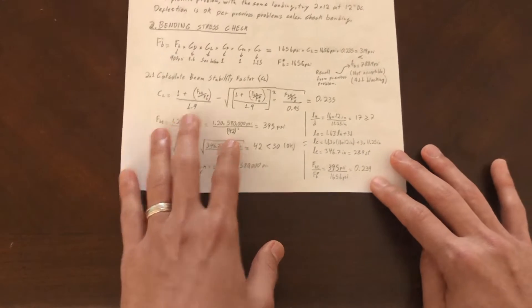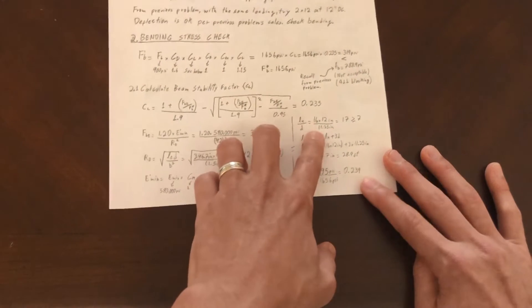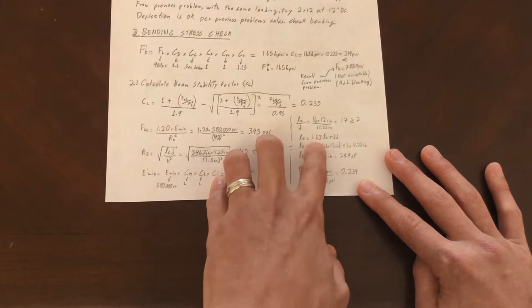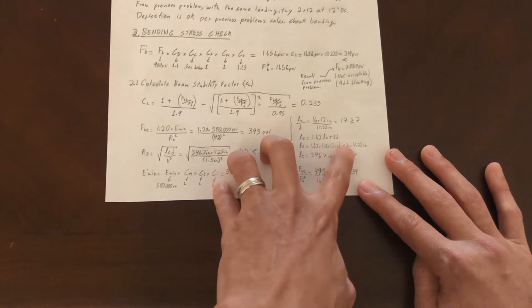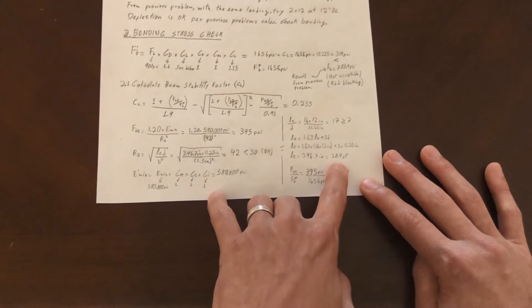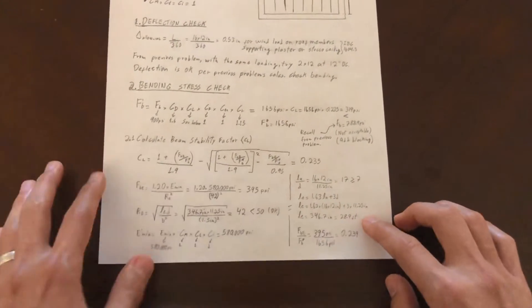First thing here, LU over D is 17, so it's greater than 7. Therefore we used that second equation I showed in the table: 1.63 LU plus 3 times D. Once we plug that in, we see that our effective length is actually 28.9 feet.